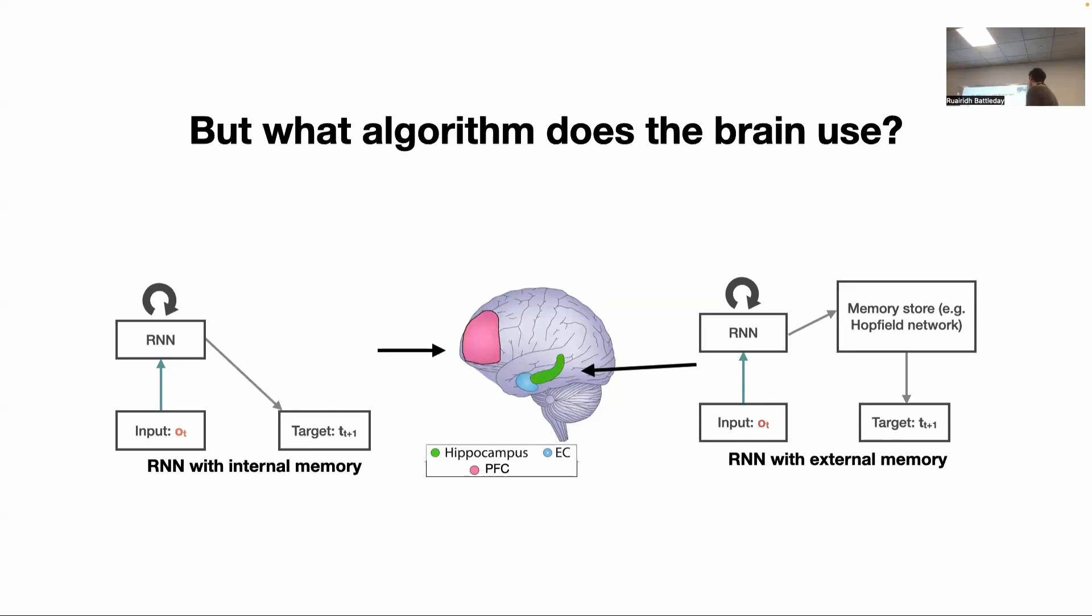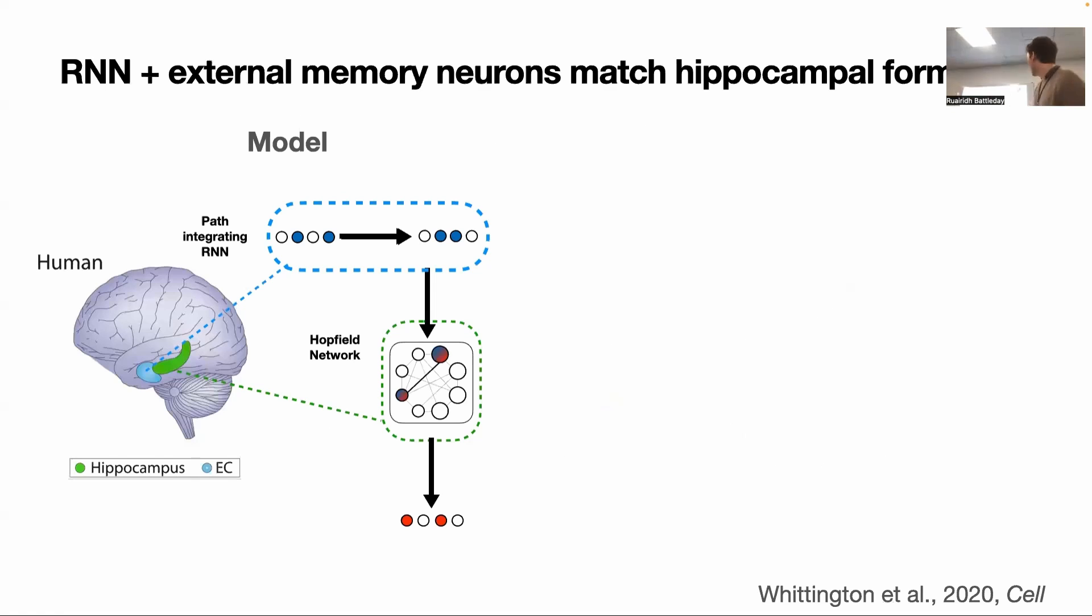Hopefully I've convinced you that RNNs do, at least in these tasks, they do really learn these two different algorithms if one's got an external memory and one doesn't. The question, though, is what on earth does the brain actually use? So now I'm going to try to show you that this is a slightly more elaborate version, but this is the RNNs external memory. And I'm going to try to show you once you train that on these tasks, you observe all of the same cells that you see in the brain, in this one bit of the brain, the hippocampal formation.